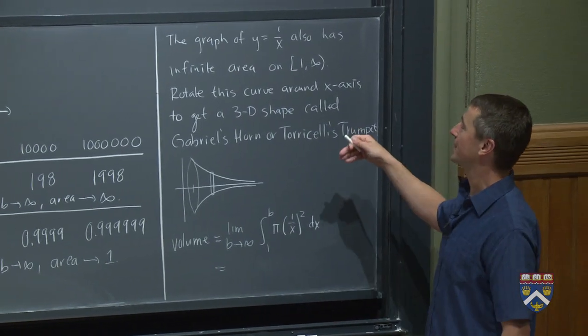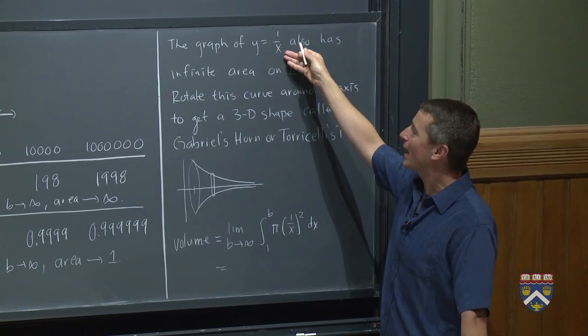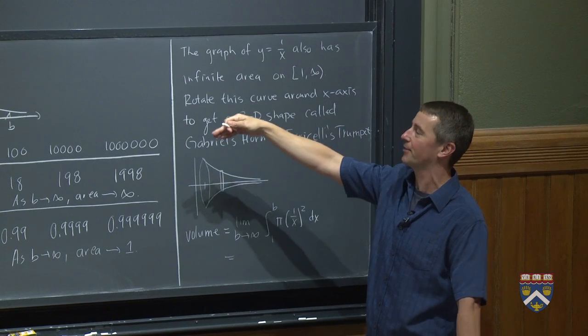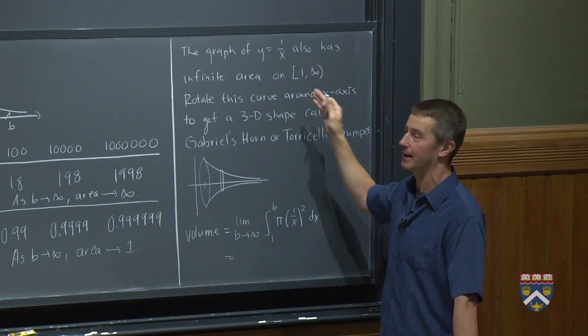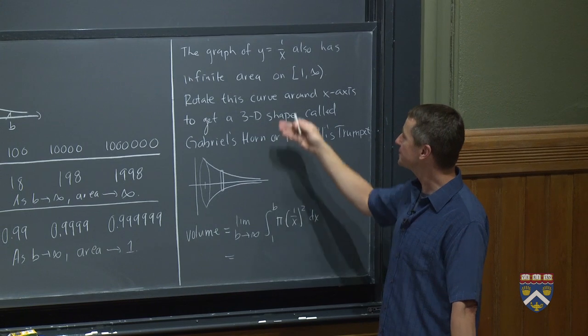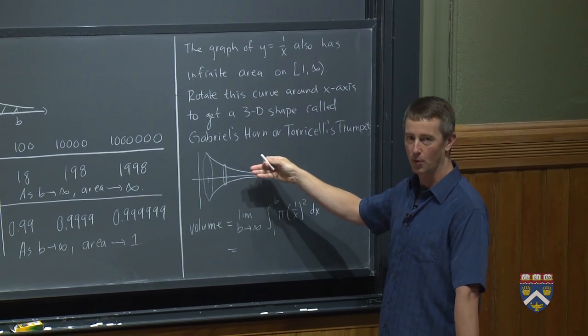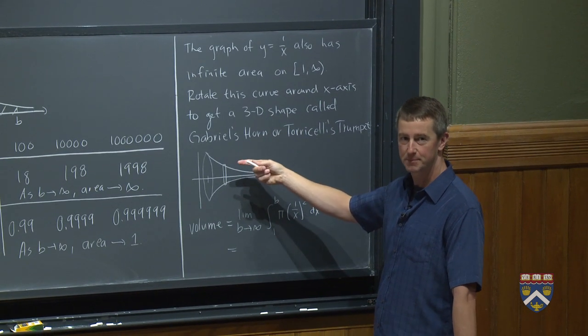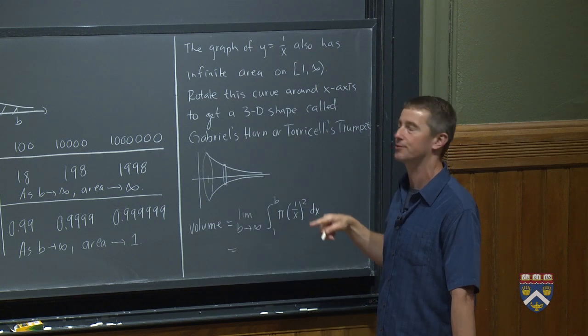So one more thing about this. If we take the graph of y equals 1 over x and you do the same thing, we'll leave it to you to do that, you'll also see that it has infinite area. Now, if we do something that you're going to see a lot more of next semester where you spin a curve around an axis and you create a three-dimensional shape.